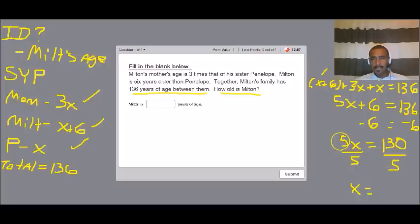Five divided by five is one or just leaving X or one X. 130 divided by five equals 26.